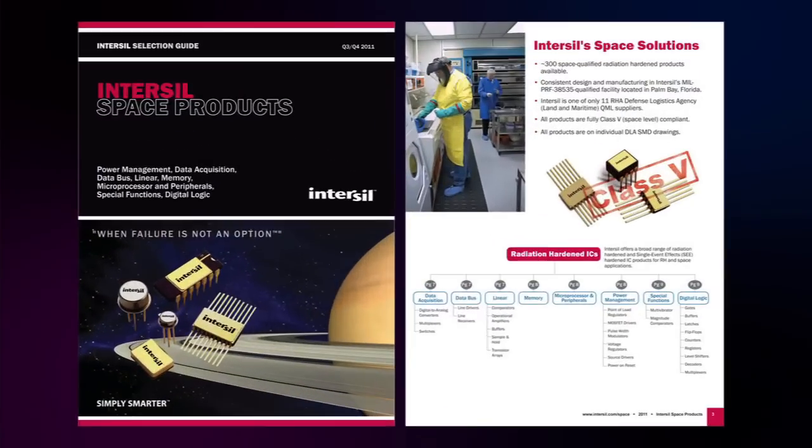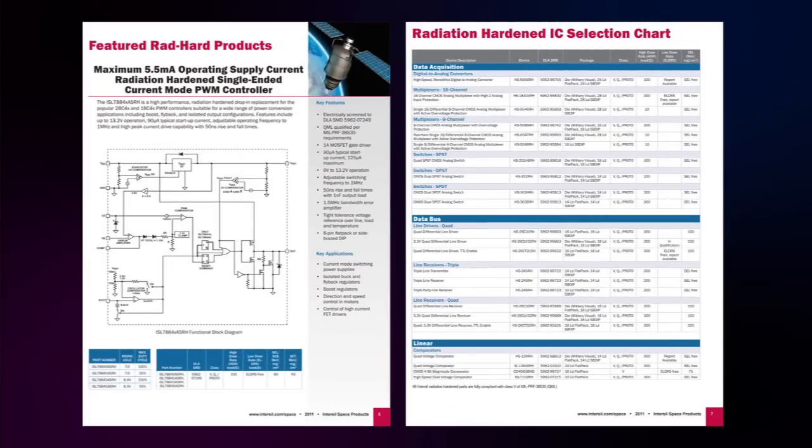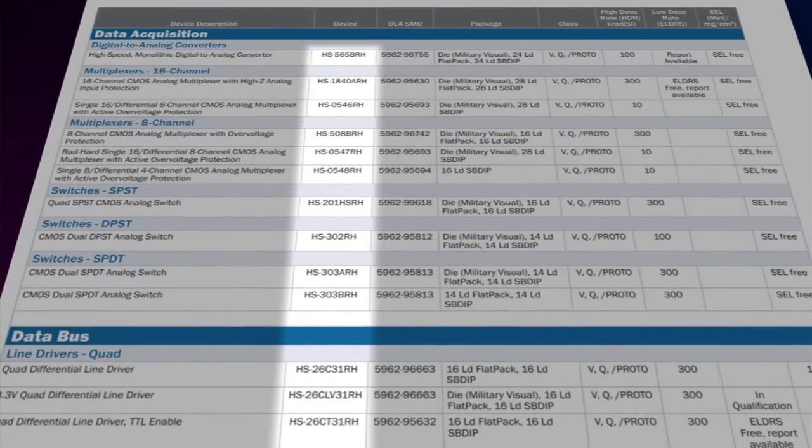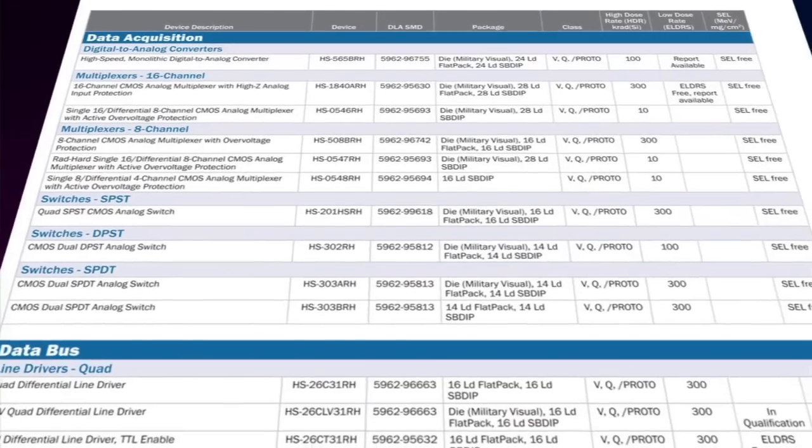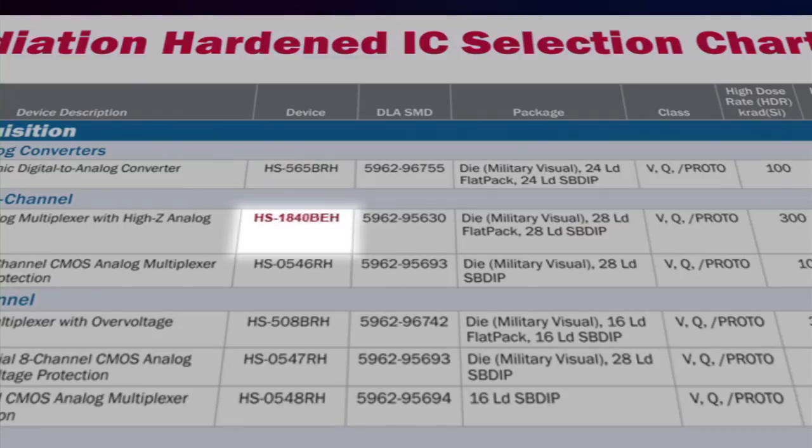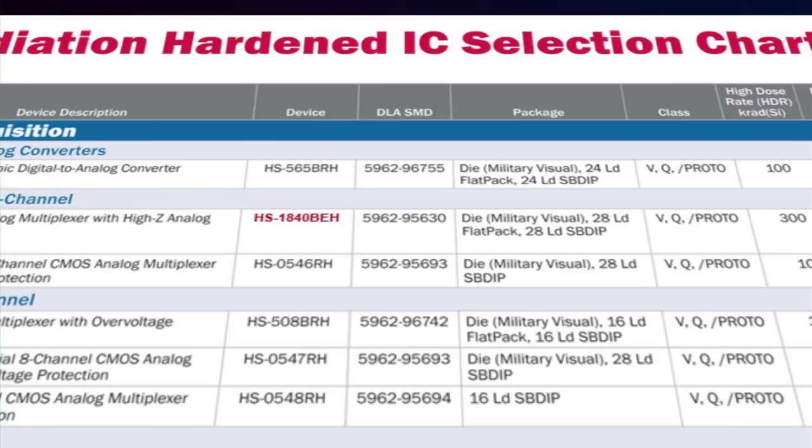Today, customers are able to determine if a part has been radiation tested at a high dose rate level by the RH designation in our part numbering scheme. Going forward, a customer will be able to determine if it's been low dose rate tested by the designation of the EH letters. EH designation means both high dose rate as well as low dose rate testing. We currently plan on releasing all of our rad hard parts in an EH flow.